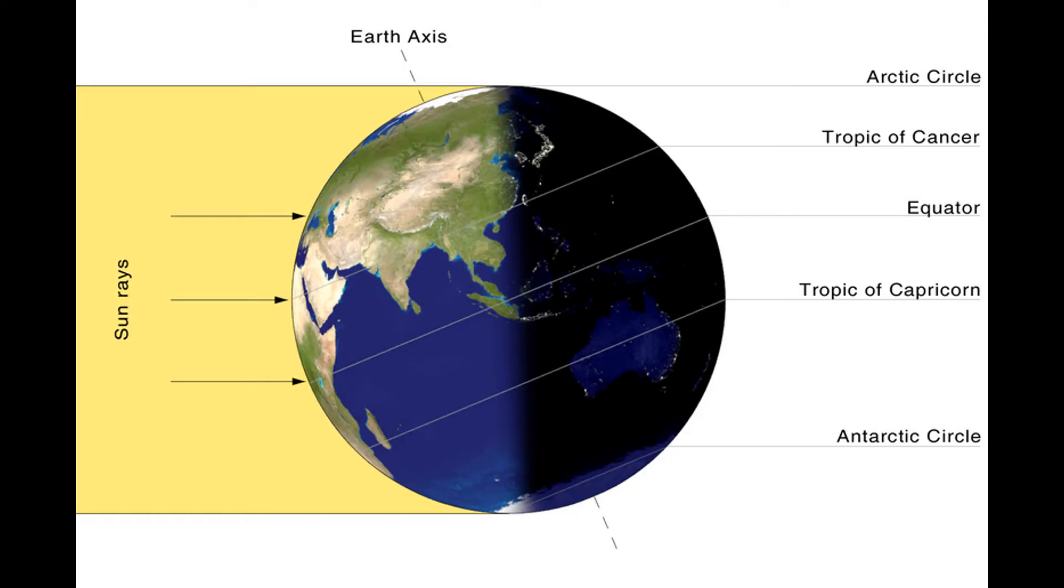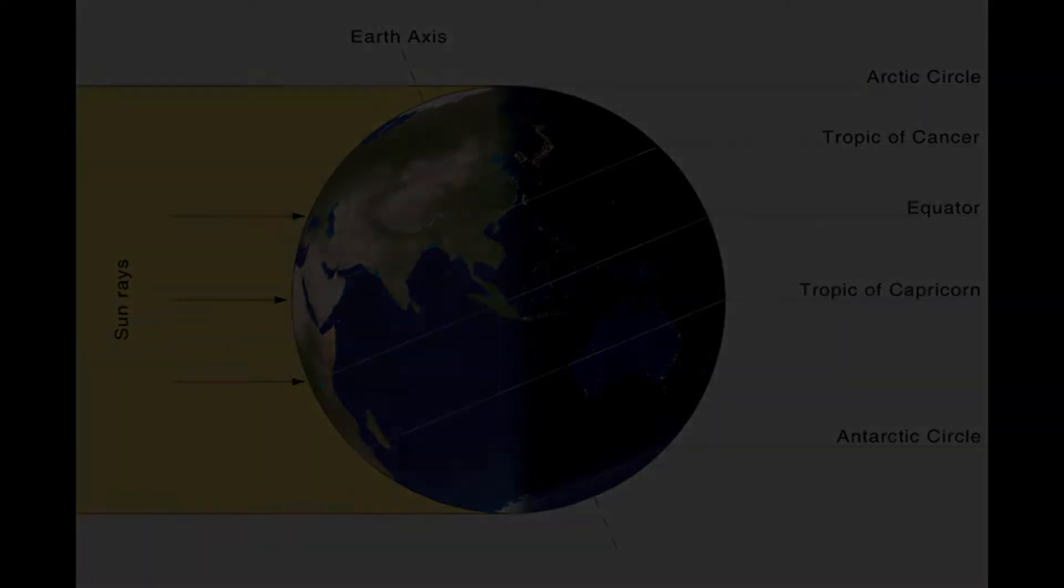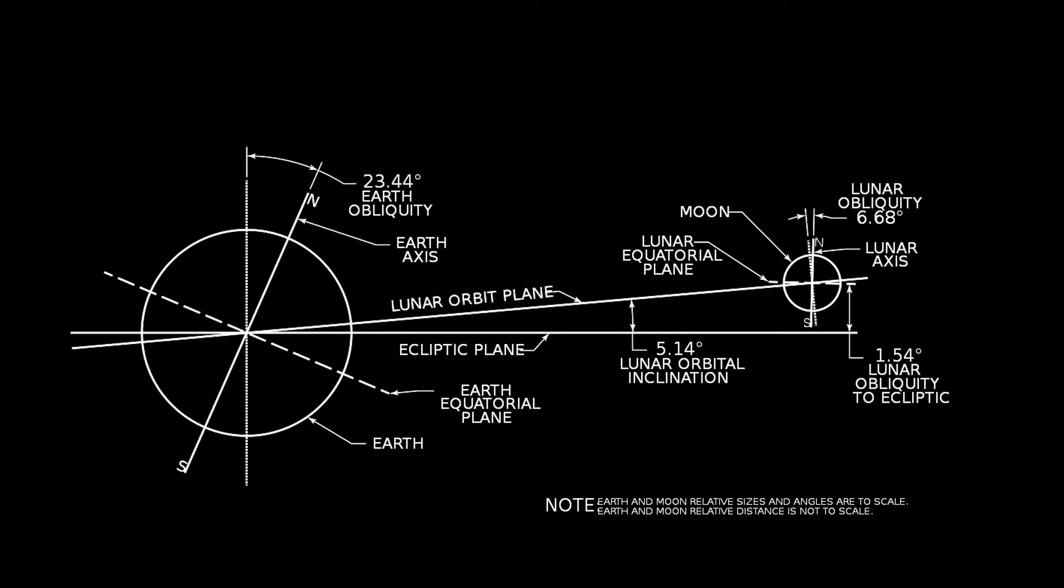So what does cause libration? You all know that the Earth's axis is tilted compared to our orbit around the sun. Well, the moon's got the same thing going on. Its axis is tilted compared to its orbit around Earth.